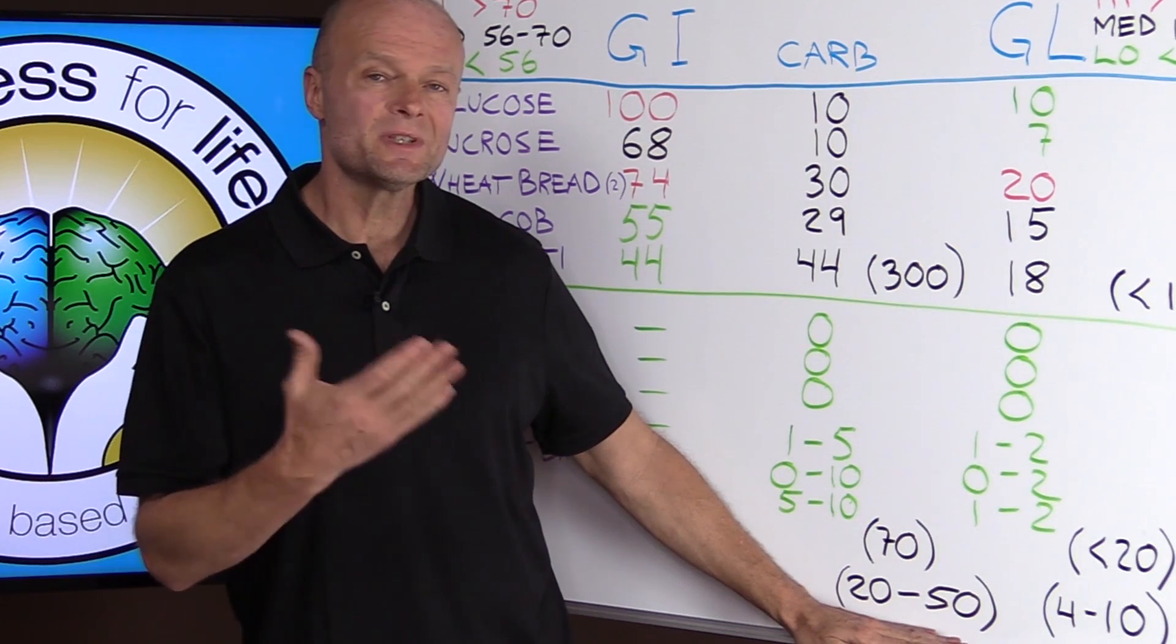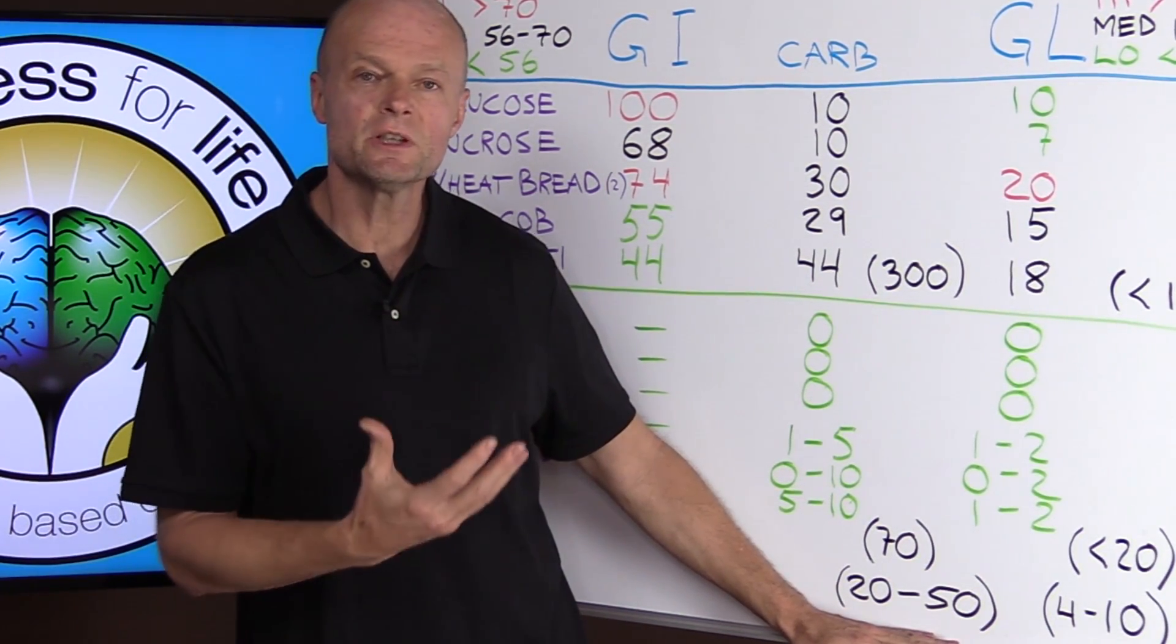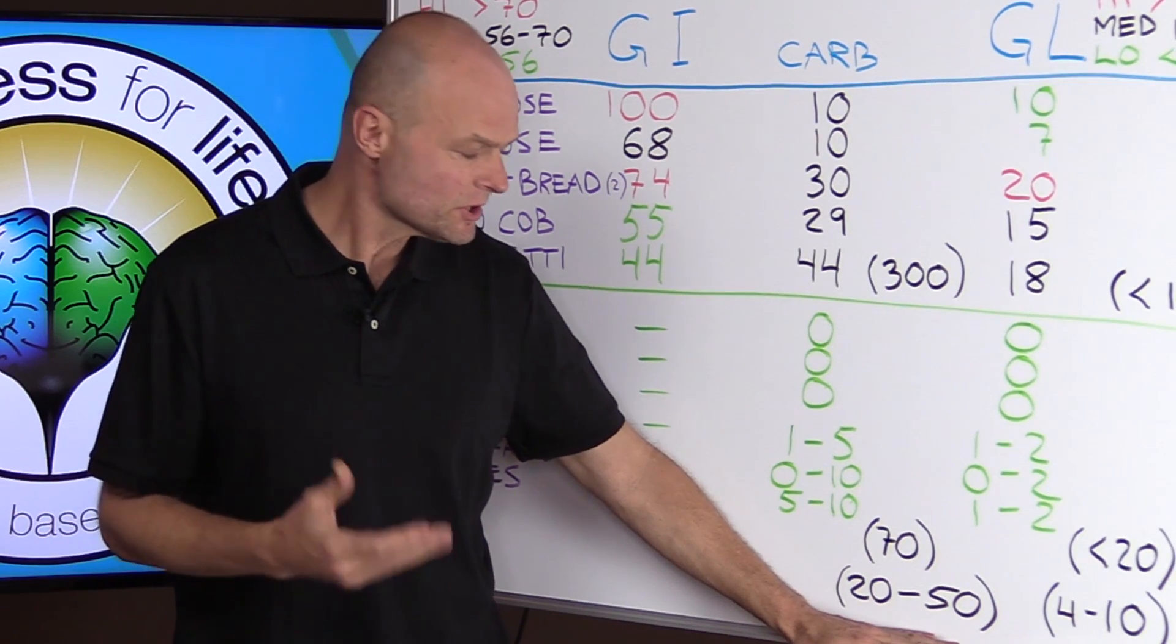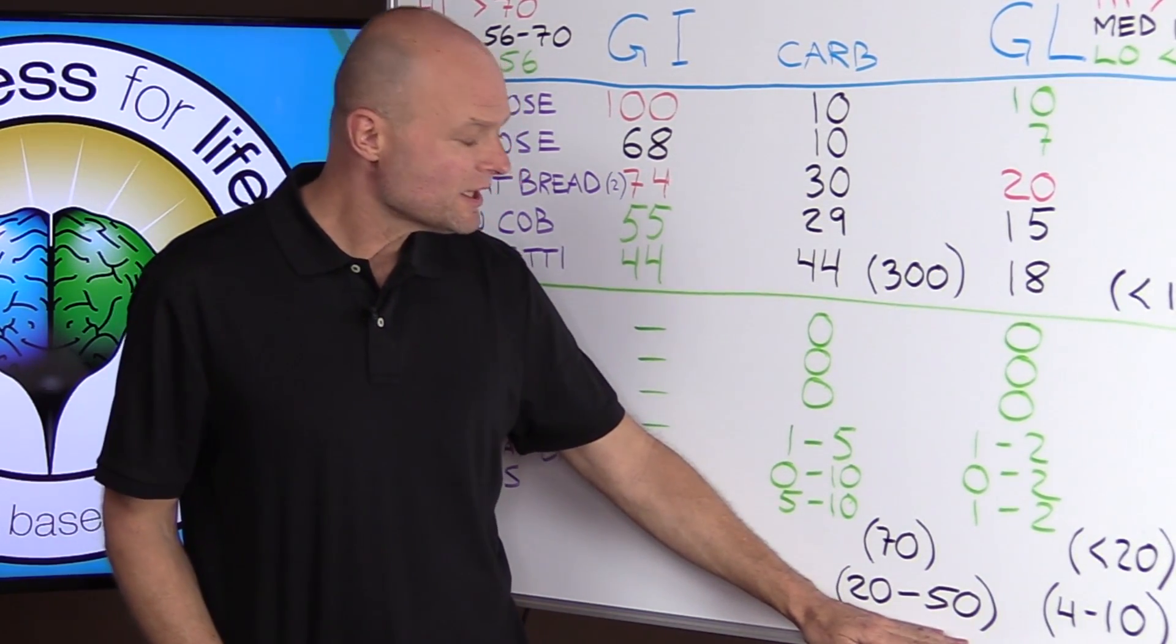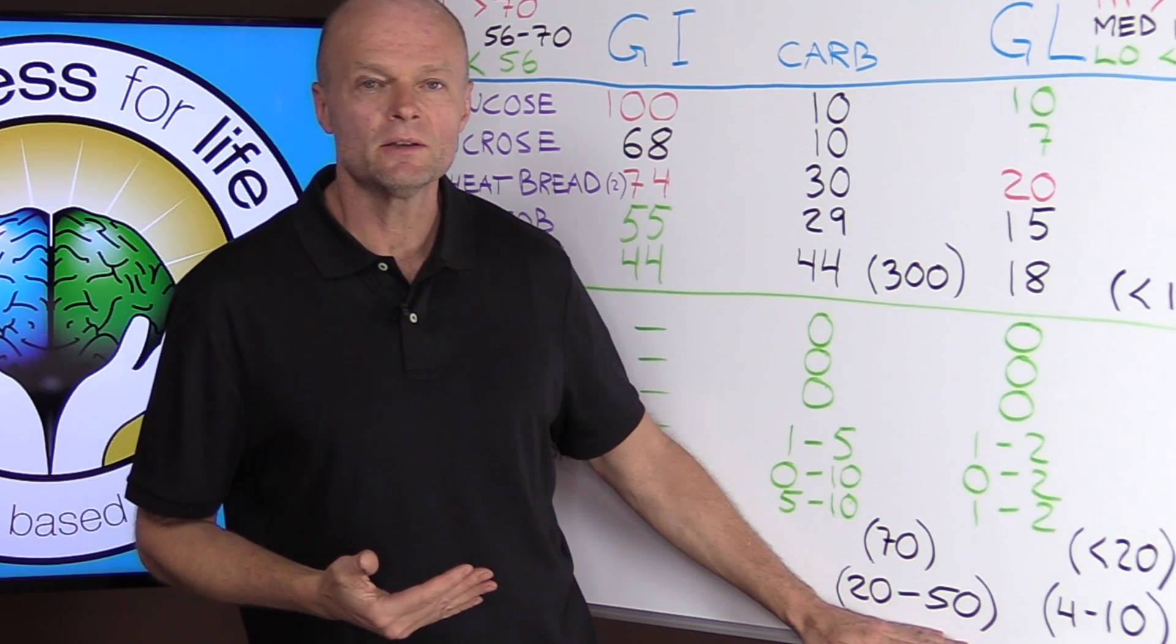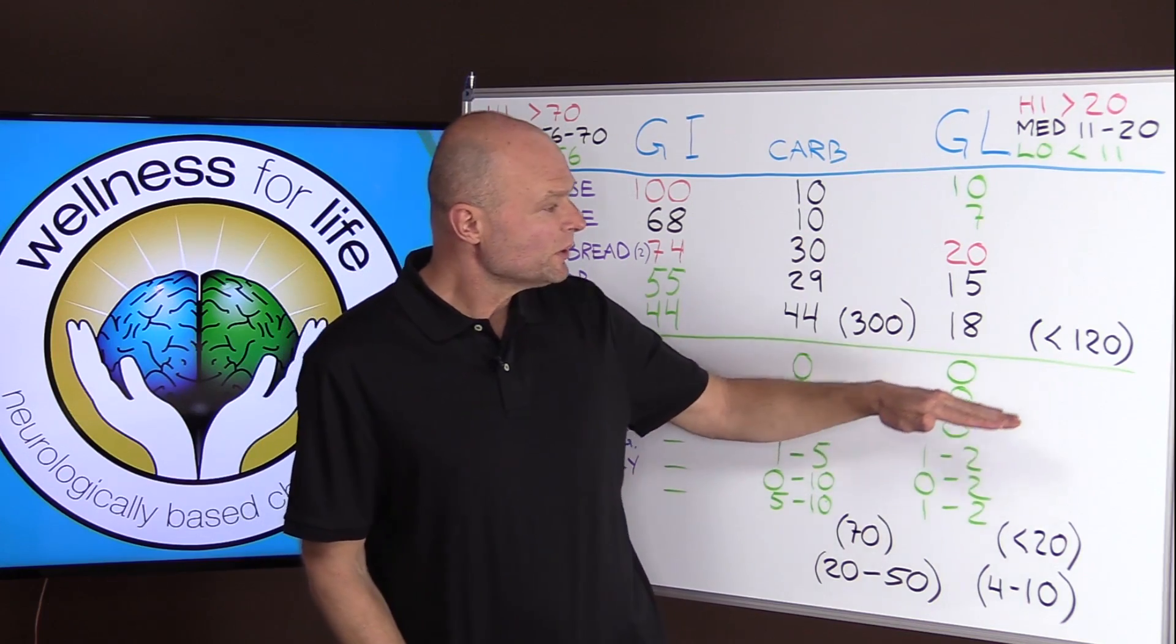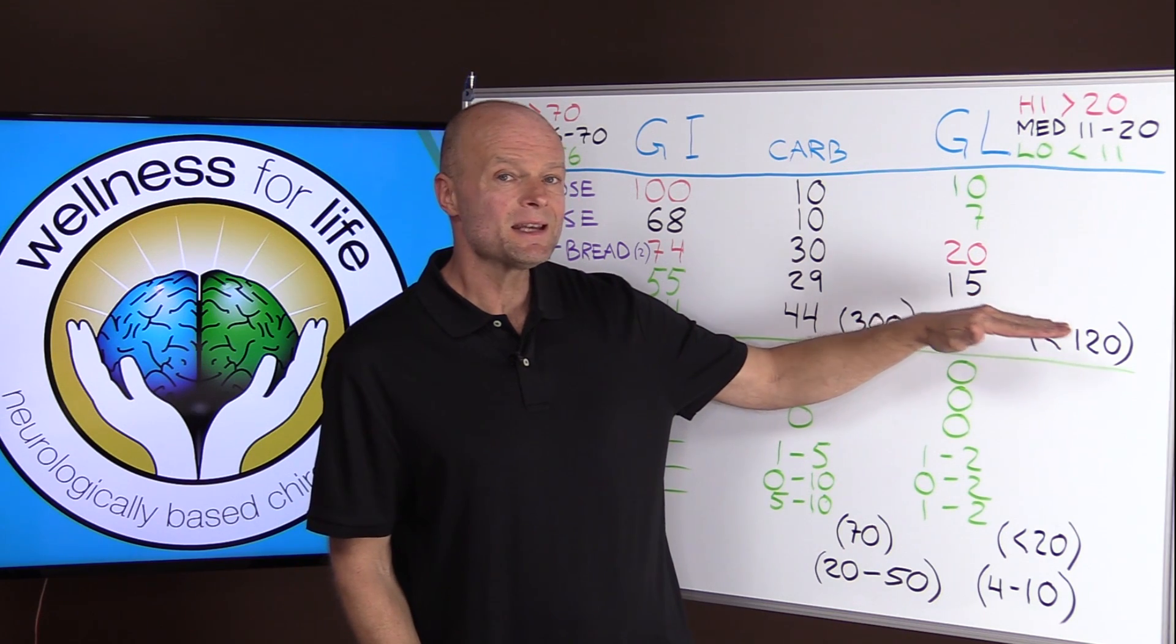And if you are insulin resistant or you have an inflammatory problem or some kind of degenerative condition that you're trying to reverse, you should probably try to keep it between 20 and 50, at least long enough that you can recover and reverse some of those conditions.